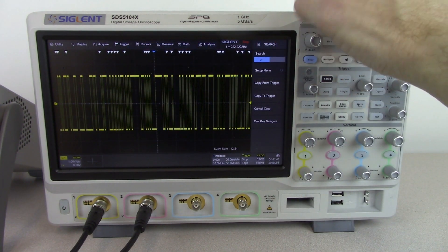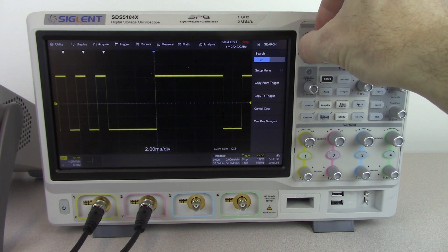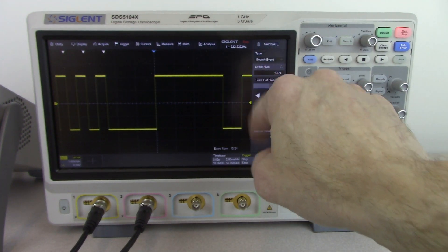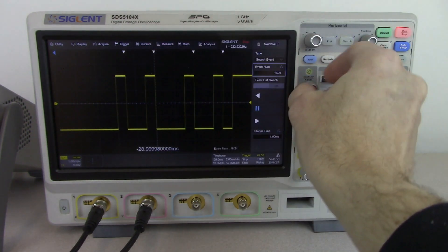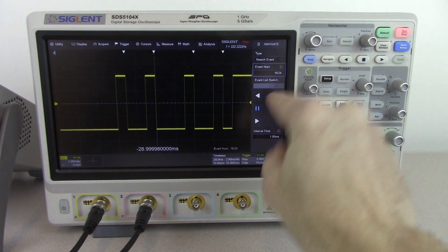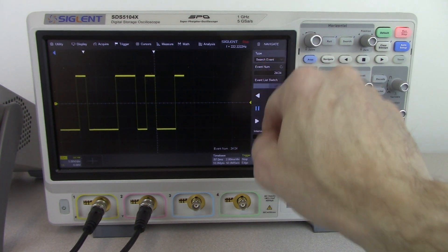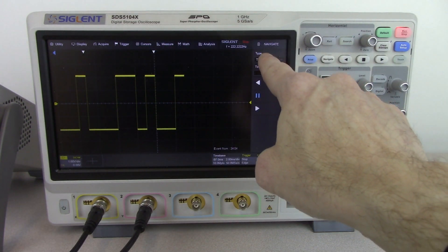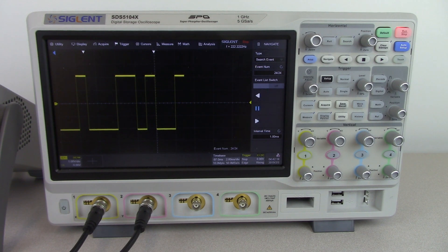We can see all of those. If we made the data set larger, we could also look through more data. Now we can shrink in and we can actually go to one key navigate. That's going to get us the event number. So we can actually sequence through each individual event, or we can fast forward and rewind through those events as well as pause. We can change that search event to go by time as well if we wanted to just look at time elapsed from the trigger event. The search event can be very useful if you're looking through large data sets.